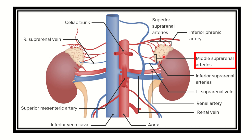So the adrenal gland is supplied by three arteries: the superior suprarenal, middle suprarenal, and inferior suprarenal artery. The superior suprarenal arises from the inferior phrenic, the middle suprarenal arises from the abdominal aorta, and the inferior suprarenal arises from the renal artery.